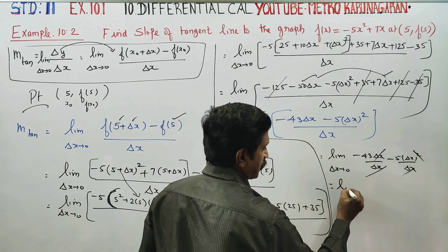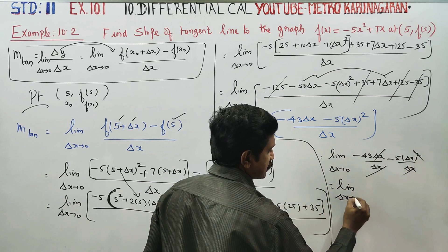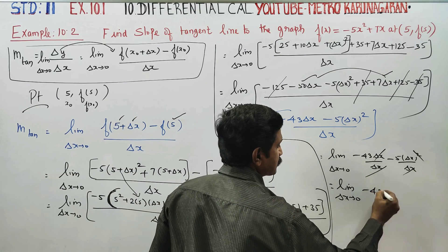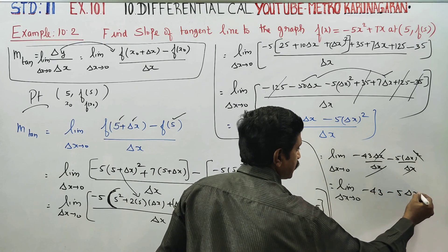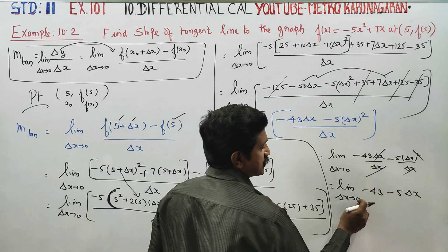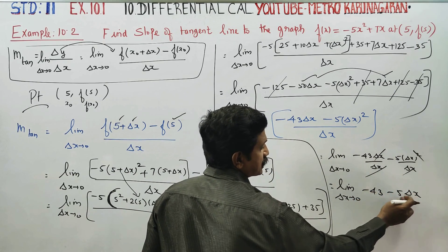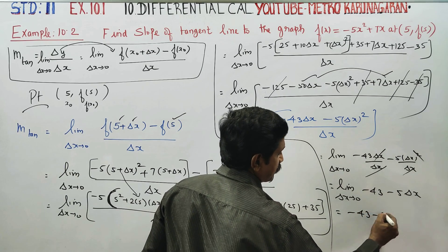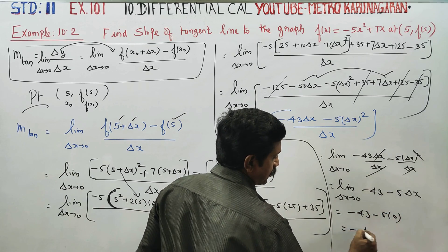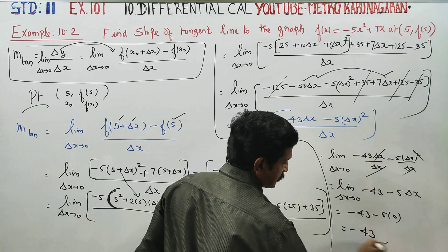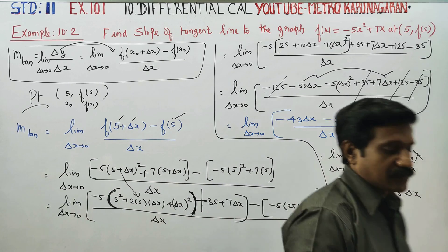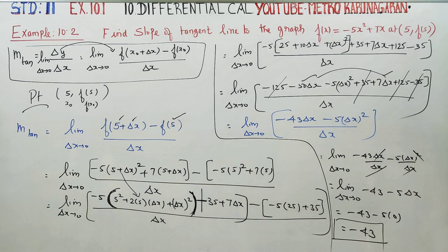Now limit as delta x turns to 0: this is minus 43 minus 5 times delta x. Delta x turns to 0, so 5 times 0 is 0. Now minus 43, 5 times 0 is 0. Your slope is minus 43. This is your final answer for this problem. Thank you.